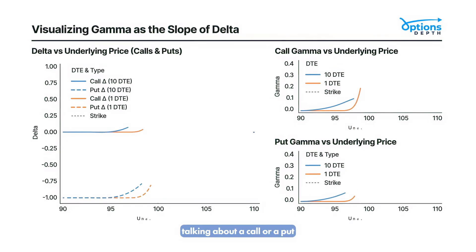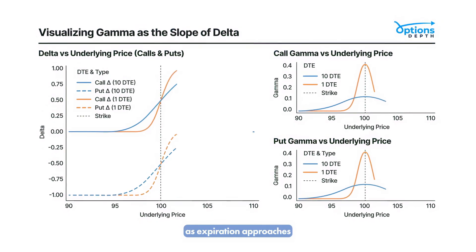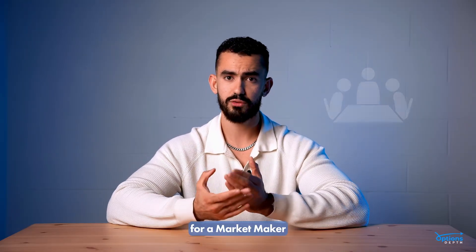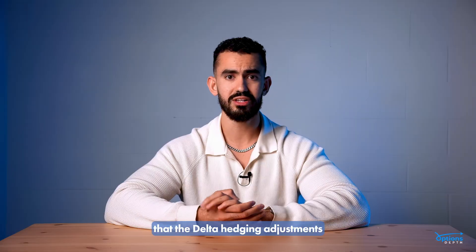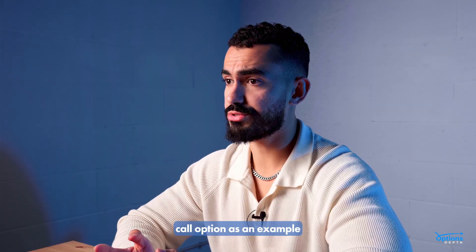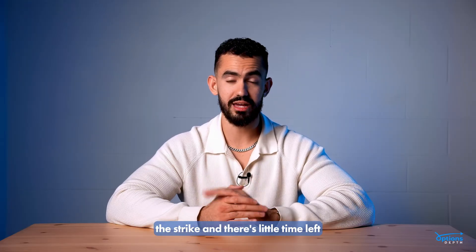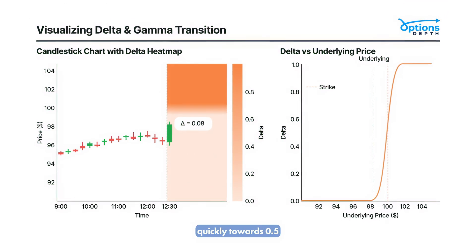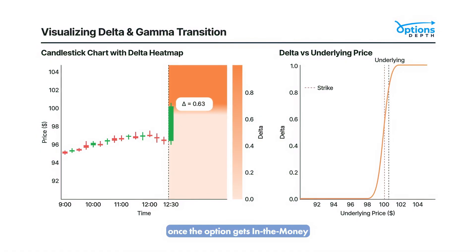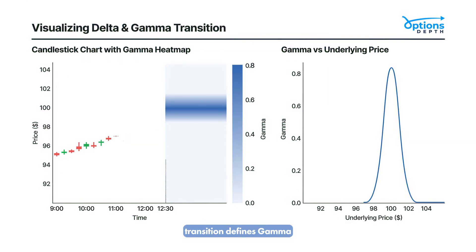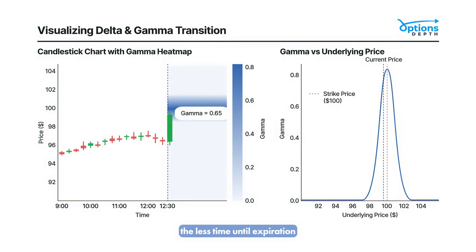For long options, whether a call or a put, Gamma is always positive. As expiration approaches, Gamma becomes more concentrated and amplified near the strike price. For a market maker, this means Delta hedging adjustments become more abrupt within a very narrow price range. Take a short-dated call option as an example: when the underlying is just below the strike with little time left, Delta is almost zero. As price moves closer to the strike, Delta jumps quickly towards 0.5, and once in the money, Delta approaches 1. The less time until expiration, the sharper this shift.